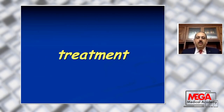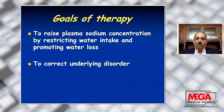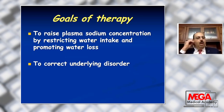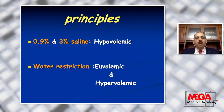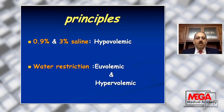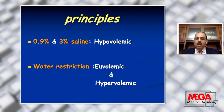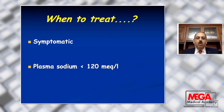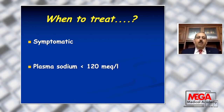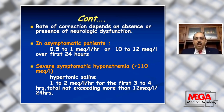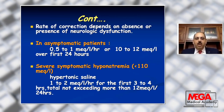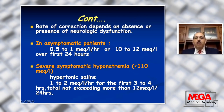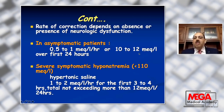The treatment goals are to raise plasma sodium concentration by restricting water intake and promoting water loss, and to correct the underlying disorder. In hypovolemic hyponatremia, we can use normal saline 0.9% or hypertonic saline at 3% concentration. In euvolemic and hypervolemic patients, water restriction only may correct hyponatremia. When to treat: when the patient is symptomatic or plasma sodium is below 120 mEq/L. The rule of correction is slow and gradual — avoid rapid correction as it will result in permanent neurological dysfunction. The correction should not exceed 0.5 to 1 mEq per liter per hour.